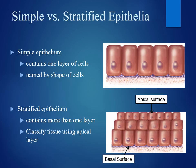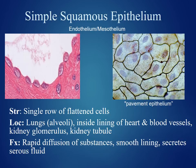The first tissue we'll discuss is simple squamous epithelium. The structure is a single row of flattened cells. You find this tissue in the lungs, specifically at the alveoli, also inside the lining of the heart and blood vessels, kidney glomerulus, and kidney tubules. The function of this tissue is for rapid diffusion of substances.